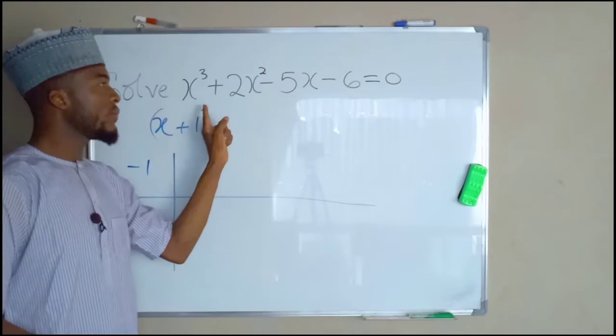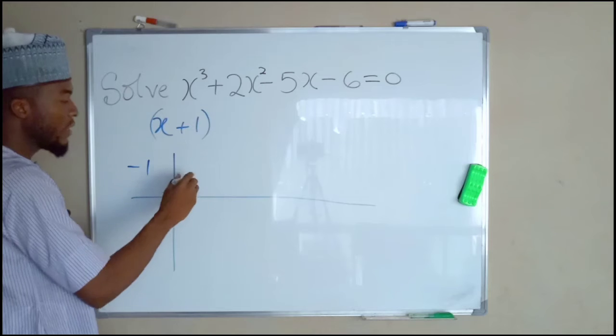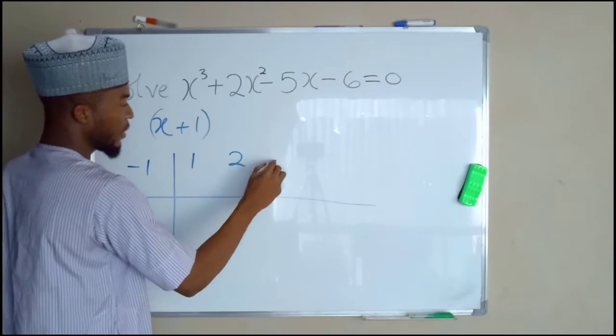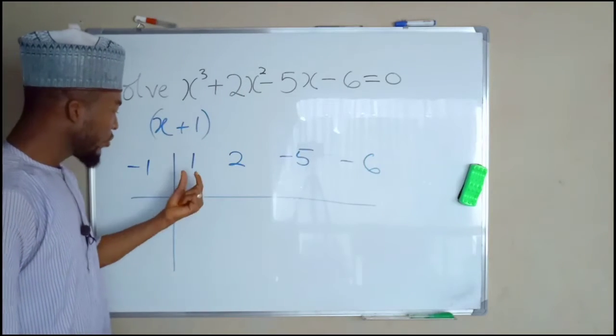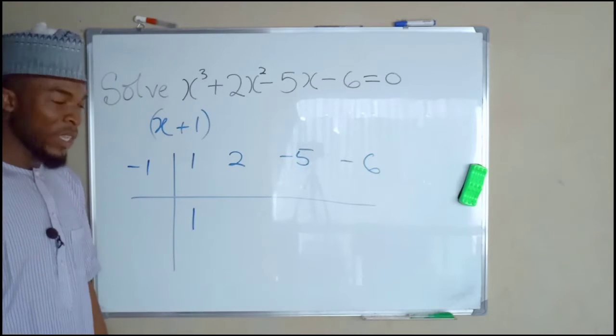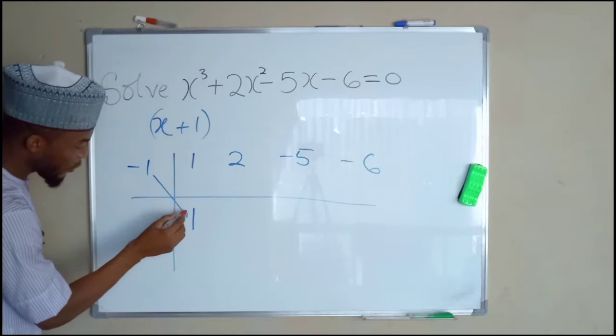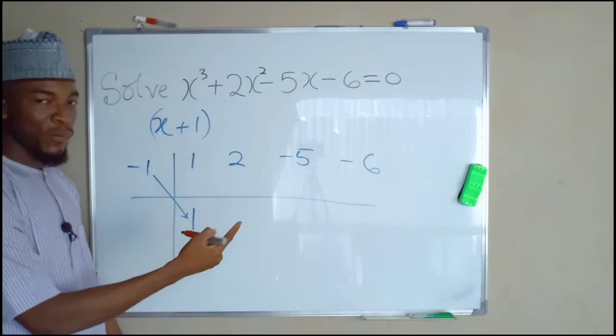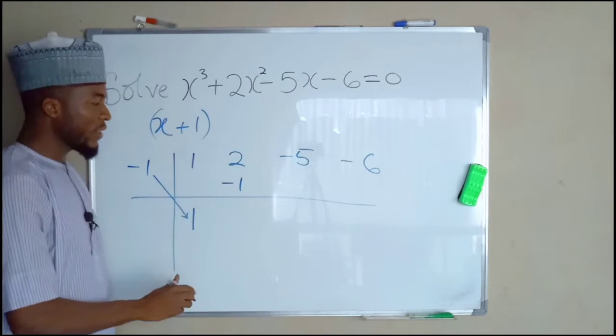We are going to write down the coefficient of this cubic equation, including the constant term. The leading coefficient is 1, 2, negative 5, and negative 6. We are going to drop down the leading coefficient, which is 1. So now what we are going to do, we are going to multiply this negative 1 with this positive 1. Negative 1 times positive 1 is negative 1. Then we write it here. Then we add these two together.